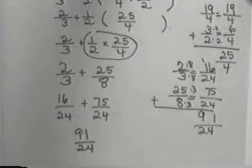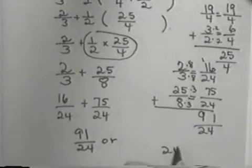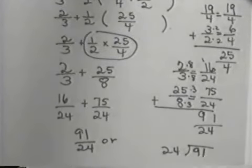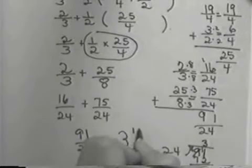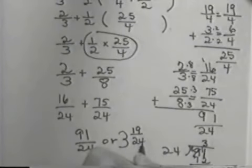And since there's no common divisor in 91 and 24, we could leave it like that. Or, we could divide it out. Let's see how many times 24 will go into 91. Probably 3 times. 3 times 4 is 12. 6 plus the one that we carry is 7. When we subtract, we have 2 from 11. We'll leave 9. 7 from 8. We'll leave 1. So, we have 3 and 19/24.